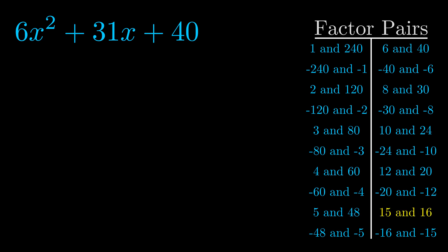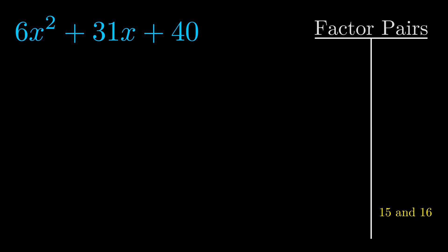And really this is the only factor pair that we need. Now once we have this factor pair, what we want to do is use it to split up the b value.